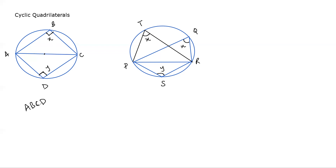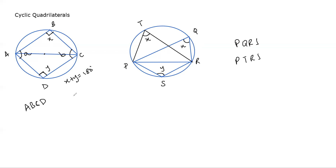This is a special quadrilateral because all its vertices are on the circumference of the circle. Similarly, PQRS and PTRS are also cyclic quadrilaterals. Once you have a cyclic quadrilateral, if x plus y equals 180 and you have angle A and angle B on the other two vertices, what is the sum of all four angles of a quadrilateral?